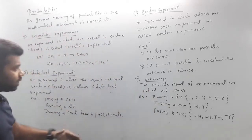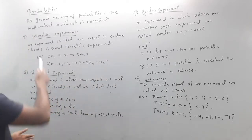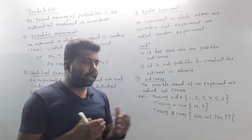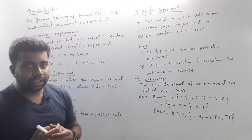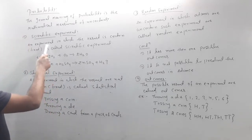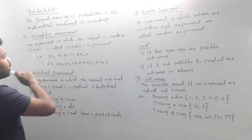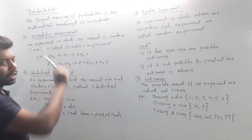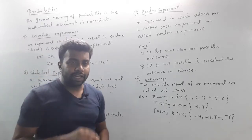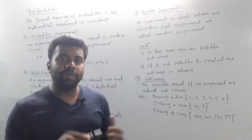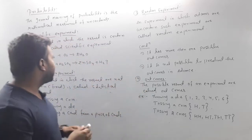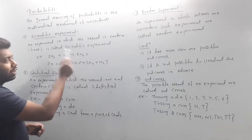Students, there are some terms to remember. The first one is scientific experiment. An experiment is where we try and check some things. A scientific experiment is an experiment in which the result is certain or fixed. It is called a scientific experiment — in the same experiment, the result is fixed. For example in a physics or chemistry experiment the result is fixed, like hydrogen plus oxygen equals water.